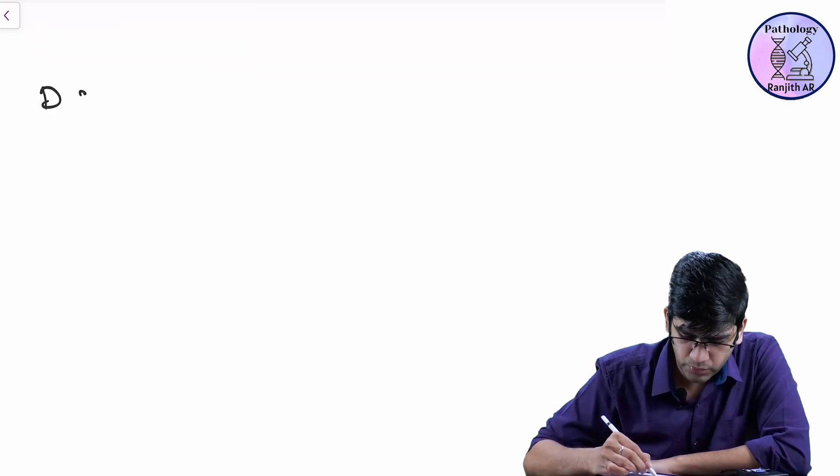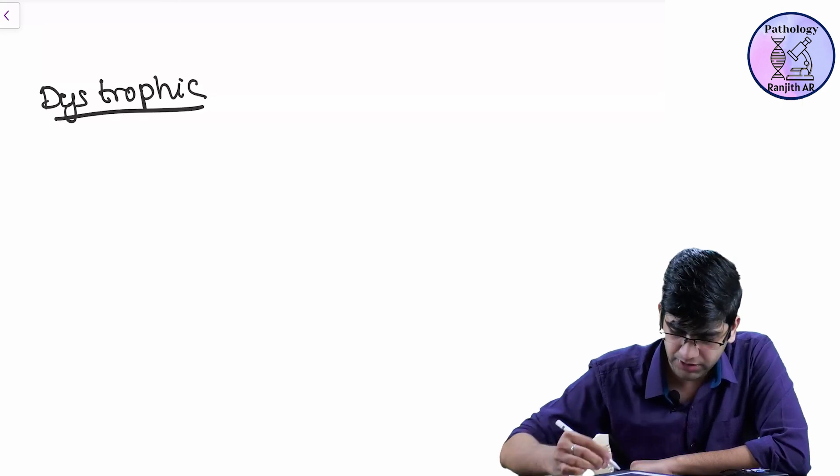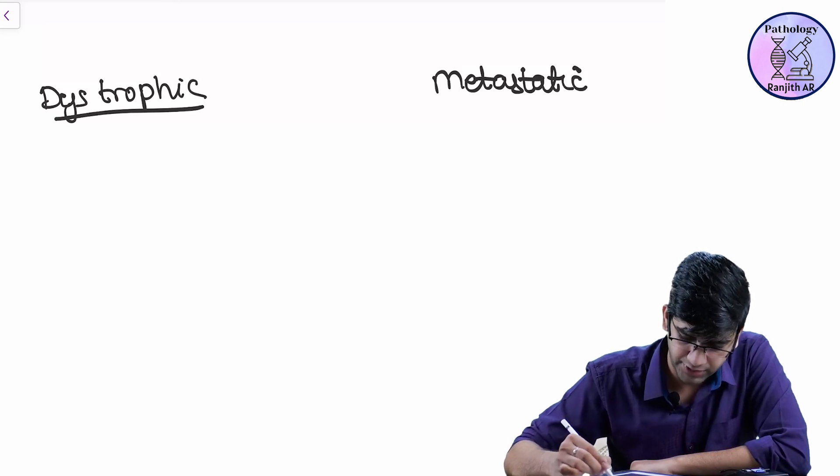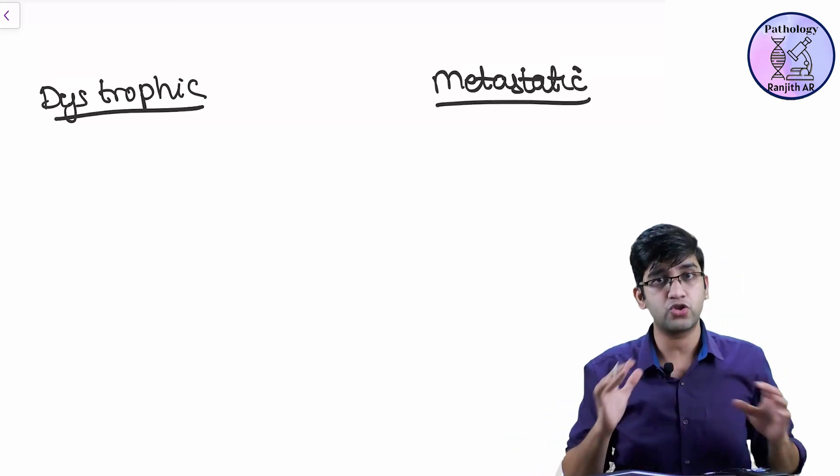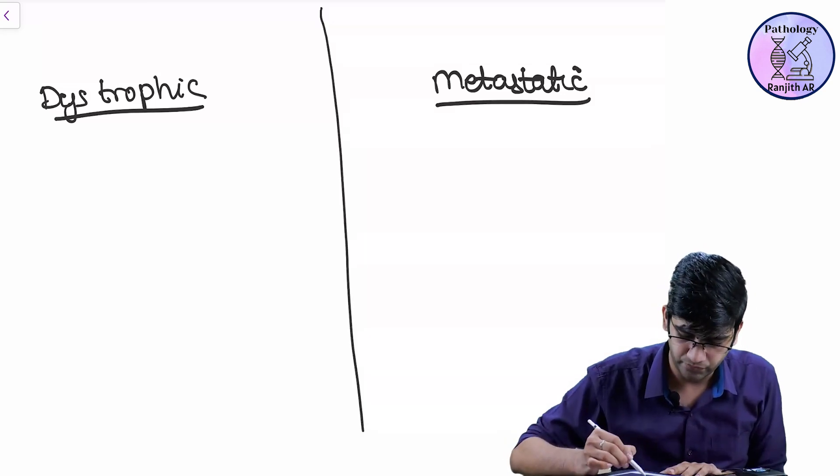I'm just going to write two words here which I'm sure most of you know already: dystrophic calcification and metastatic calcification. I have two new things - dystrophic and metastatic. Two new things.